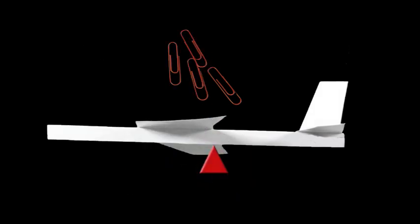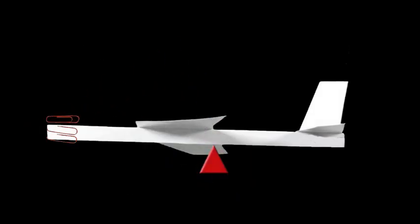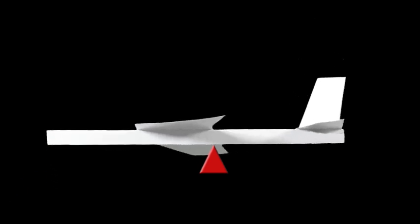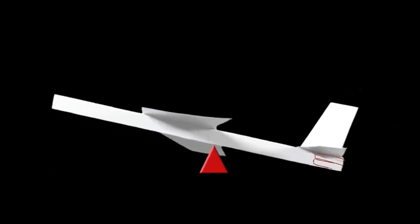Now you've identified the center of gravity on your plane. So let's see what happens if we add more paper clips to the front of the plane. How does that change your center of gravity? Or what if you added paper clips to the back of the plane? Where does that put your center of gravity?